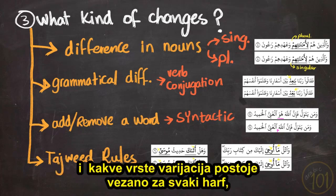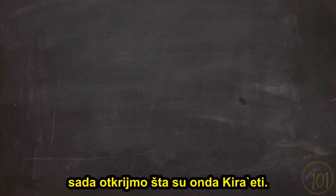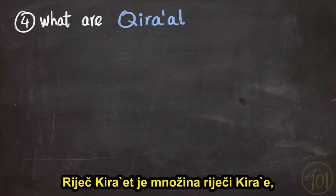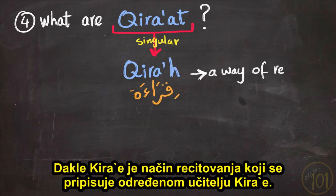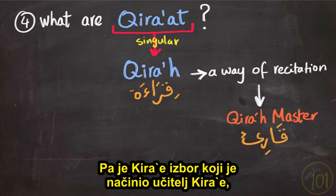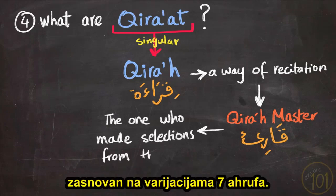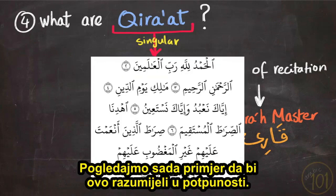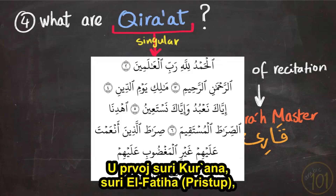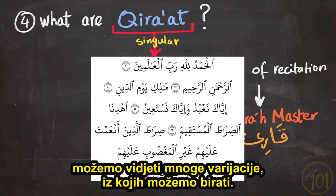The word 'qiraat' is the plural of 'qira'a,' which translates into a way of recitation of the Holy Quran. A qira'a is a way of recitation that is attributed to a qira'a master. A qira'a is just the selection that the qira'a master has made based on the variations of the seven ahroof. Let's have a look at an example using the first surah of the Quran, Surah Al-Fatiha.